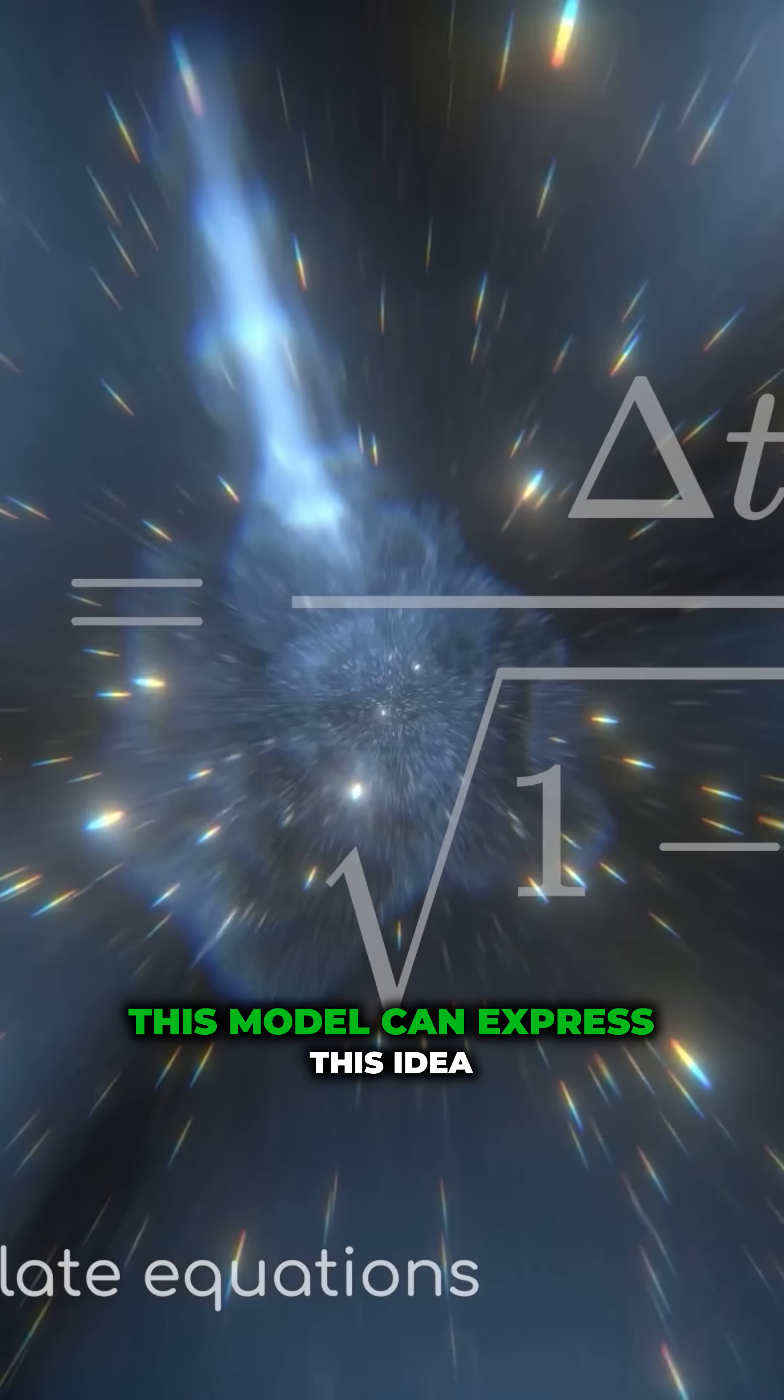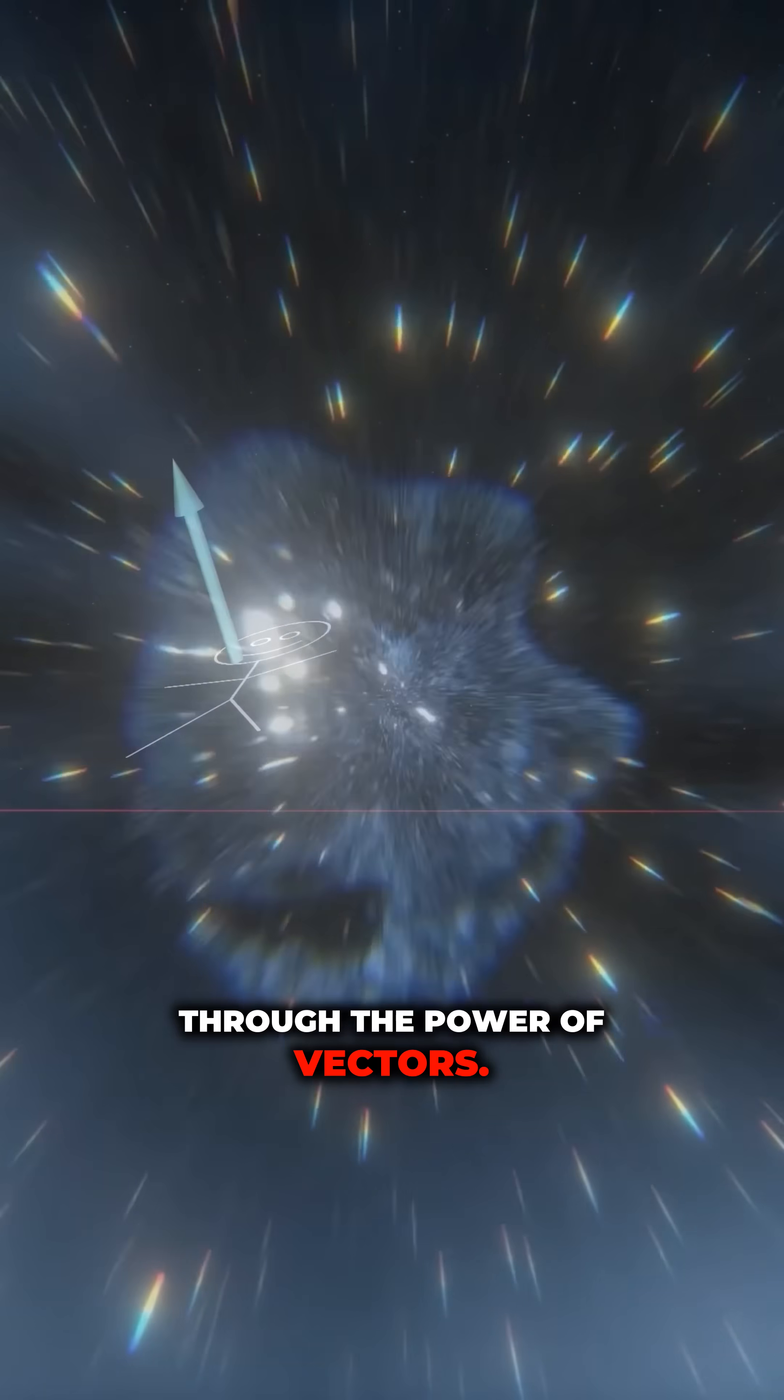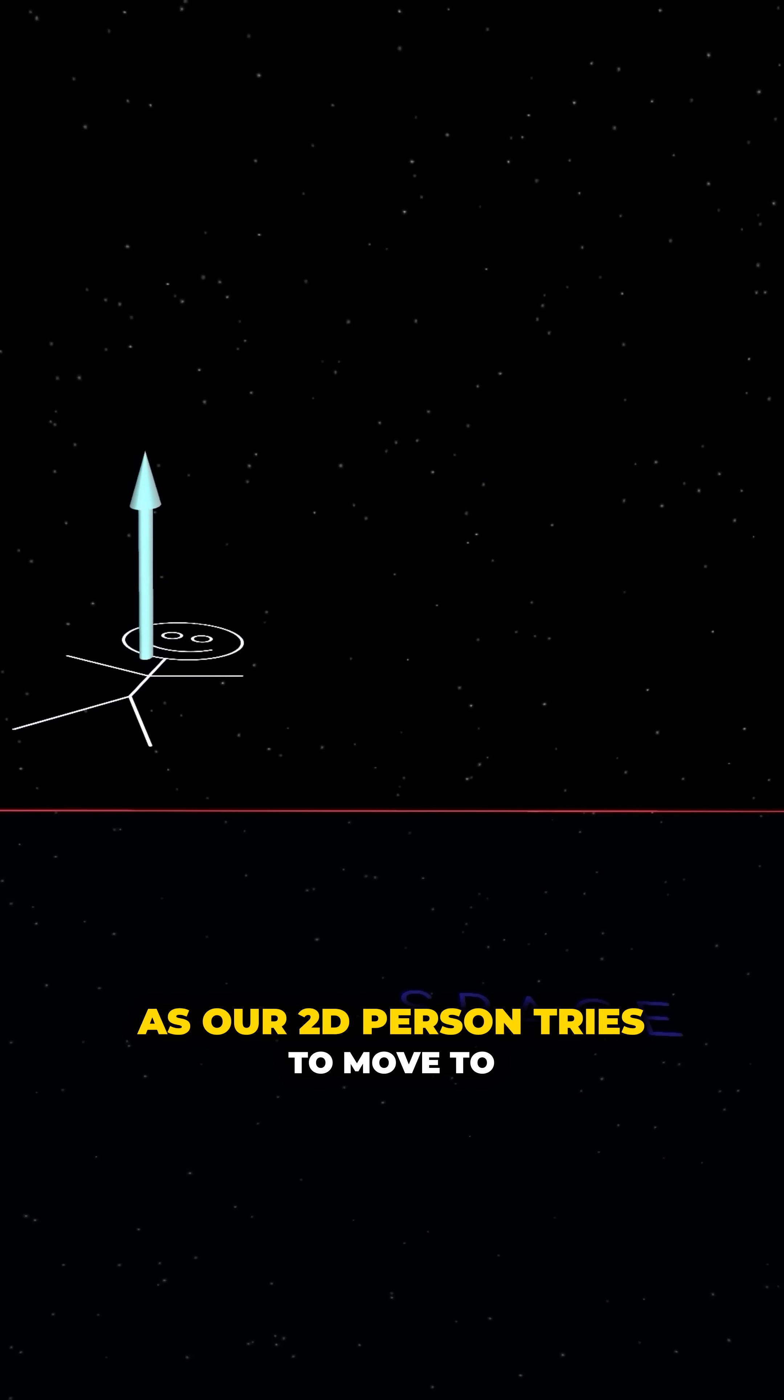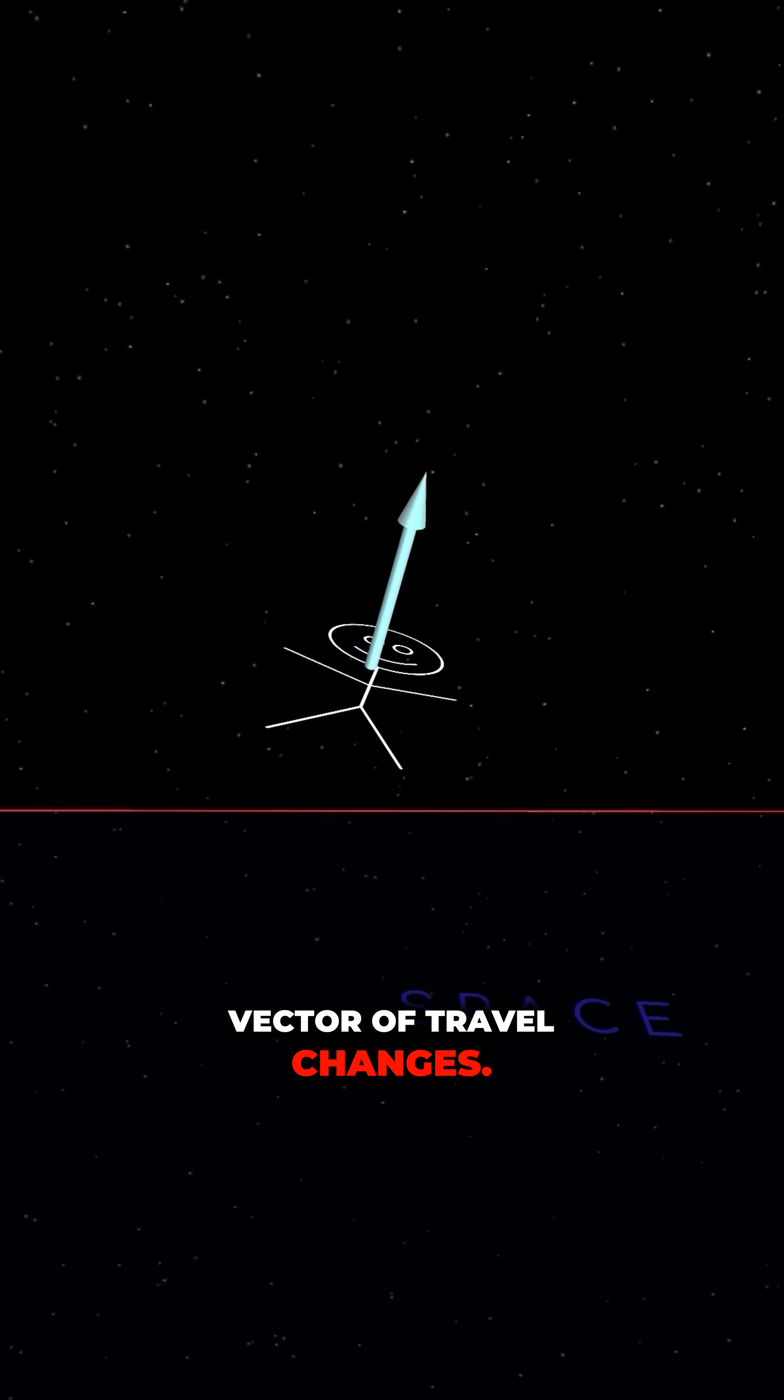This model can express this idea through the power of vectors. As our 2D person tries to move to their left or to their right, their vector of travel changes.